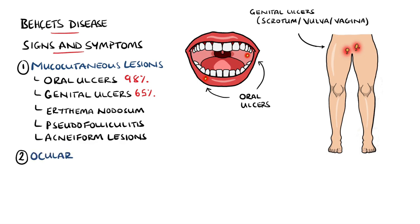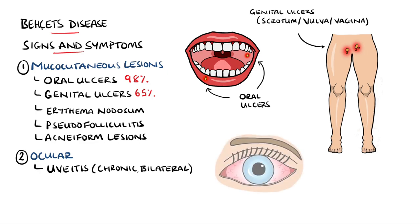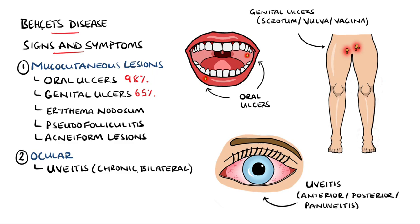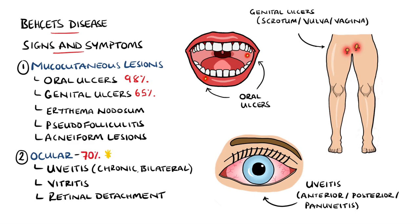Ocular manifestations include the typical finding of bilateral uveitis, which is often chronic and may be anterior, posterior, or a pan-uveitis. Vitritis — inflammation of the vitreous humour within the eyes — is also a possible finding, as is retinal detachment. The eyes are involved in up to 70% of cases of Behçet's disease, and this is significant as around a quarter of these patients become blind. Additionally, sensorineural hearing loss has been found in up to 80% of patients.